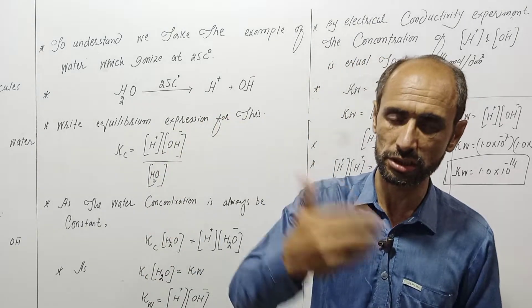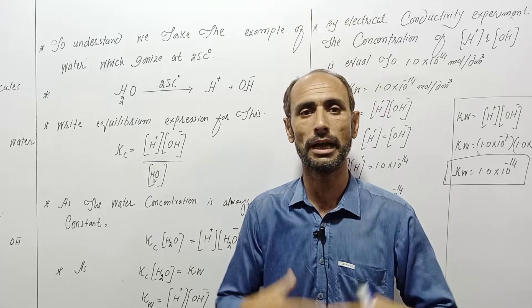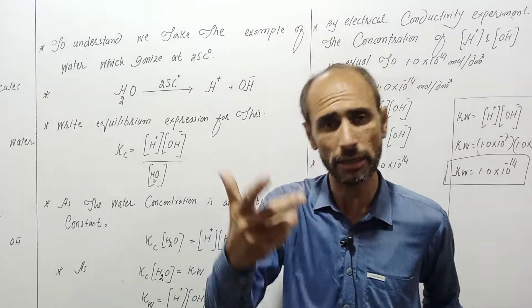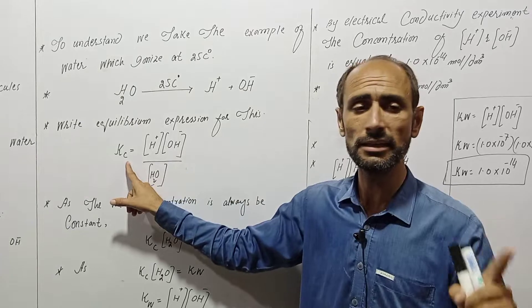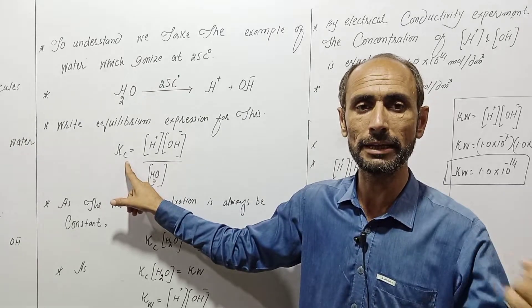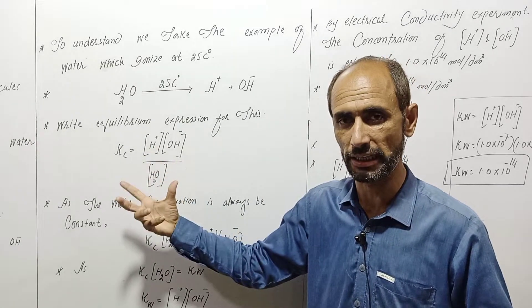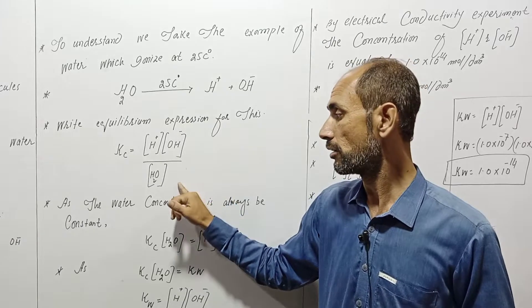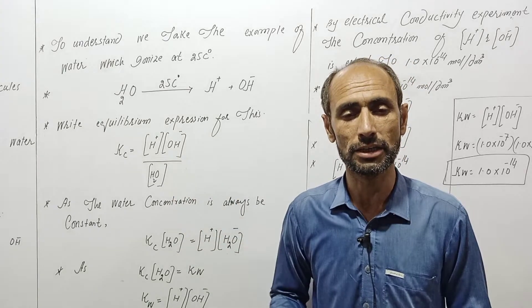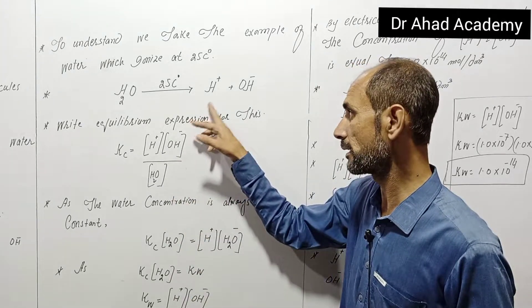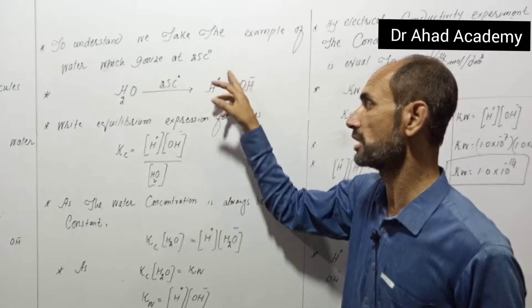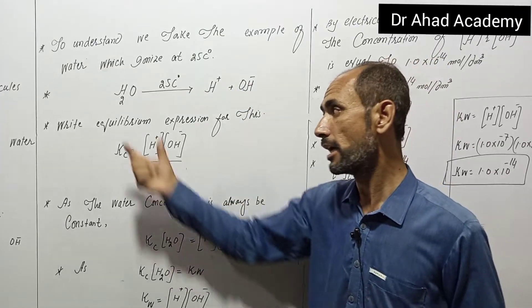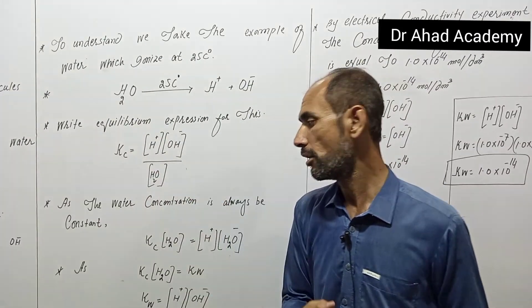This reaction has an equilibrium expression. As discussed in chapter one, the equilibrium constant Kc equals the molar concentration of products divided by the molar concentration of reactants. So Kc equals the product of hydrogen ion concentration and hydroxyl ion concentration, divided by water concentration.